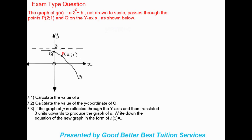The first question asks us to calculate the value of a. They have given us the value of b, which is 2. So we only have two unknowns, and we can always get the asymptote value from the graph. Let's get started.